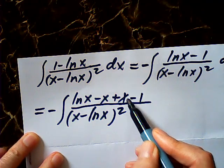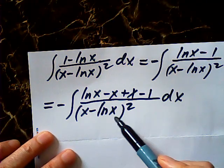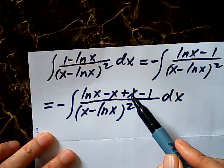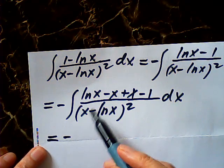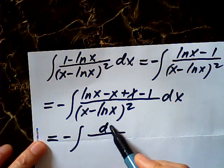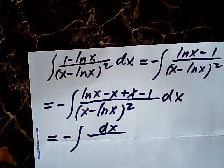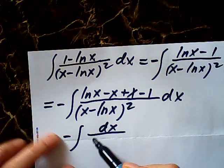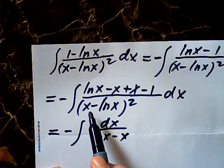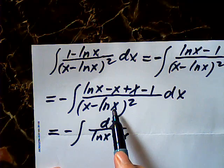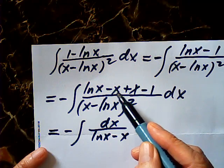And x can cancel out. See, the reason for doing this way is because I can cancel one of them. This one becomes negative integral of dx over log x minus x, over x minus log x square. And log x minus x square is no difference, so I can cancel one of them.